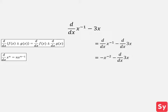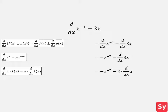Next we will compute the derivative of 3x. First we will use the multiplication by a constant rule to pull out the 3. Then we will use the power rule because we are taking the derivative of x to the 1. This now equals negative x to the negative 2 minus 3, our answer.